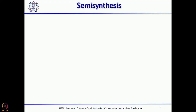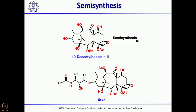Now we will move to what is semi-synthesis. Sometimes when you are trying to make a complex molecule, there is a possibility that from another natural source, a molecule very close to the molecule you are going to synthesize may be available. Then what you can do is take that molecule and do only a few functional group transformations and then synthesize the molecule you want to make. This will explain what semi-synthesis is.